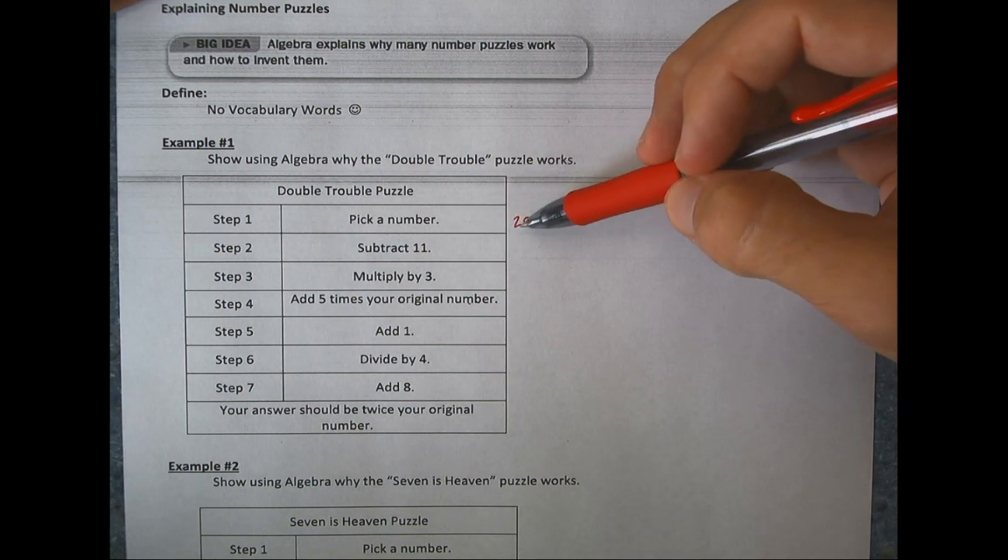So example number one, this one is called double trouble. And the reason is if you get down to the bottom, we're going to start with any number we want, and in the end, our answer should be twice the original number. So that's the trick to this one, double trouble. So let's just pick a random number. I'm going to start with 20. Now, I kind of cheated a little bit looking ahead because I saw that it was subtract 11, so I didn't pick a really small number that I was going to end up in the negatives. So I picked a number that was big enough that when I subtract 11, I have something nice.